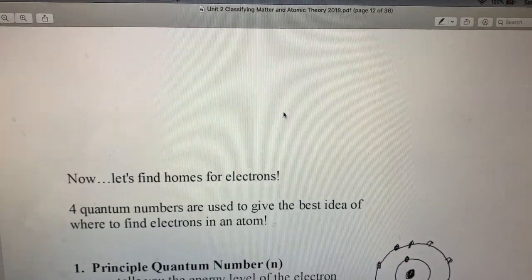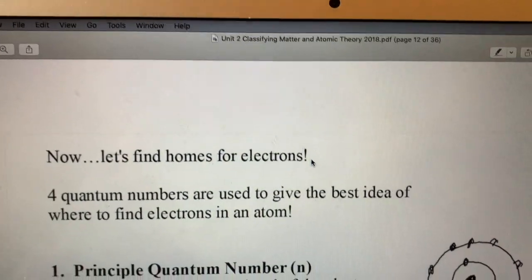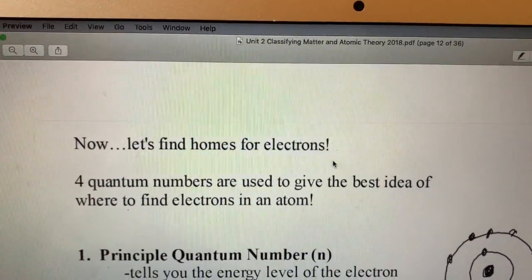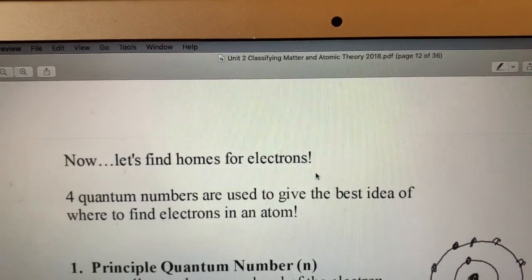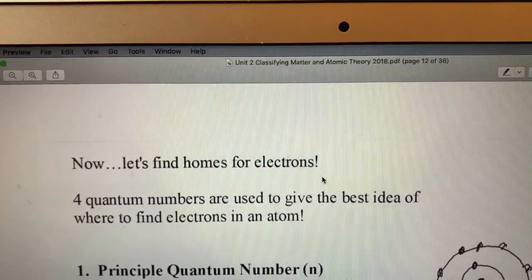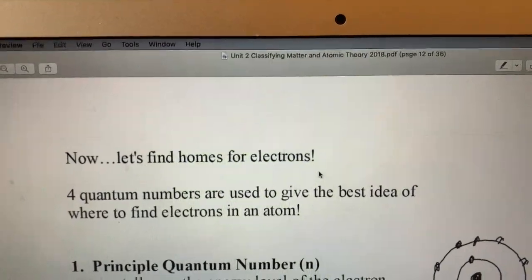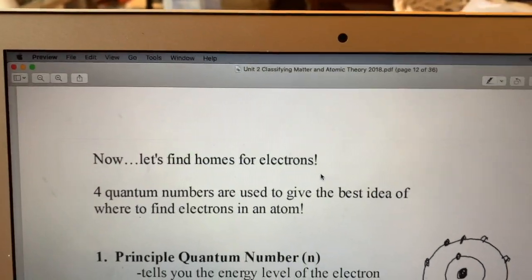Modern atomic theory uses what are known as quantum numbers to describe where the electrons can be found. The idea is to think of it as trying to give each electron within an atom a unique address, an address that no one else has.